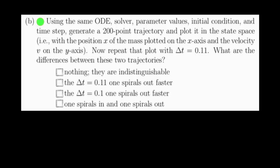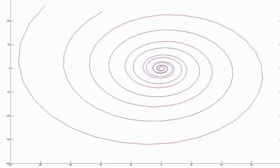In part b, we want to keep all the parameters the same and the same initial condition. We want to generate a 200-point trajectory instead of a 5-point trajectory. I'm going to generate this trajectory using a time step of 0.1, as well as a time step of 0.11. If we do this, we get the following plot. In this plot, the blue curve is generated using a time step of 0.1, and the red curve is using a time step of 0.11.